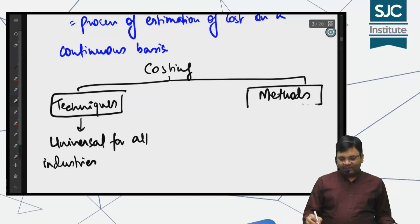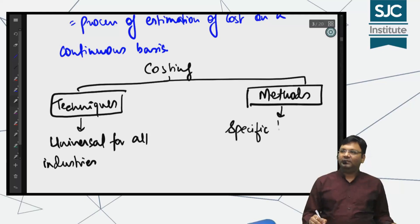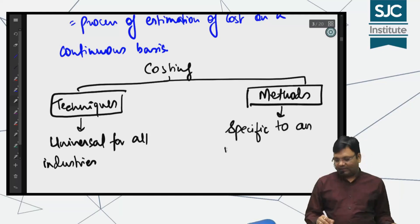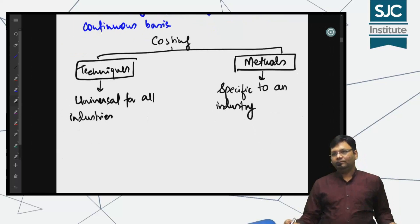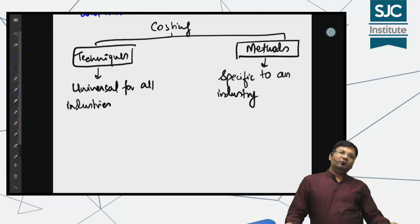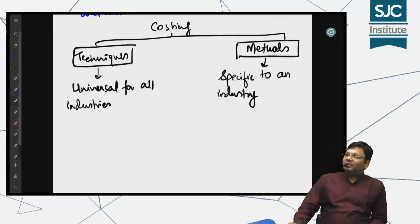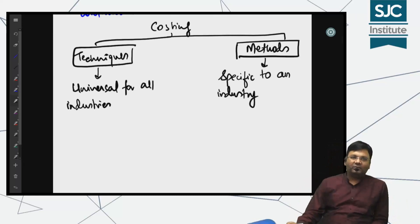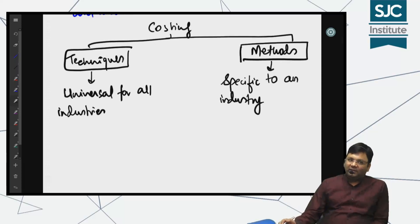Methods में आप यहाँ पे जो पढ़ते हो वो ऐसी techniques होती हैं जो हर industry के specific होती हैं — specific to an industry। मतलब जो cement वाले के लिए लागू है वो construction वालों के लिए लागू ना भी हो। जो cement वाले के लिए लागू है वो hospital चलाने वालों के लिए लागू नहीं है, तो उनके सोचने के तरीके और estimation में difference होगा। तो उनके यहाँ methods of costing चलेगा।